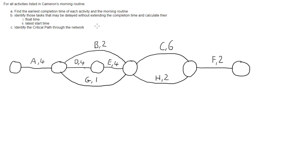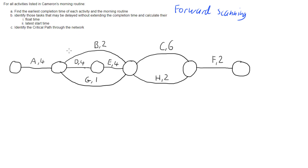For all the tasks which can be delayed, we want to work out their float time, the latest time at which we can start them without delaying the entire project, and the critical path through the network - the path of activities which cannot be delayed at all and must happen on time. To do this, we're going to use forward scanning, which is part one of critical path analysis. In the next video we'll look at backward scanning.